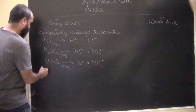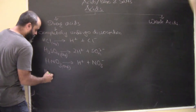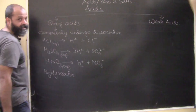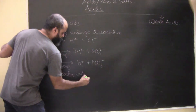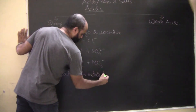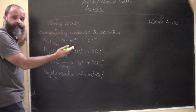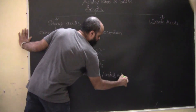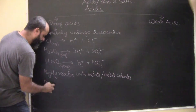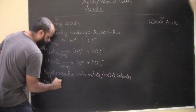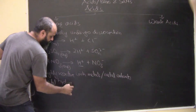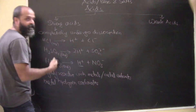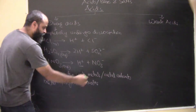This complete dissociation impacts reactivity - they are highly reactive because of the hydrogen ions produced. With metals they give hydrogen gas; with metal carbonates and metal hydrogen carbonates, they give carbon dioxide gas. The chemical reactions are not gradual - they are rapid.